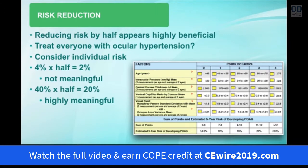So does that mean we should treat everyone with ocular hypertension and cut their risk in half? Not really. We need to consider the individual risk of different subsets of the study population. Running the OATS risk calculator shows different levels of risk — at the lowest risk band, less than 4% chance of developing glaucoma; at the highest band, over 33%, often 40% or more. If you're in the lower band at 4% and reduce it by 50%, you have a 2% risk — not particularly meaningful. But if you're in the highest risk group at 40%, cutting it in half to 20% is a highly meaningful intervention.